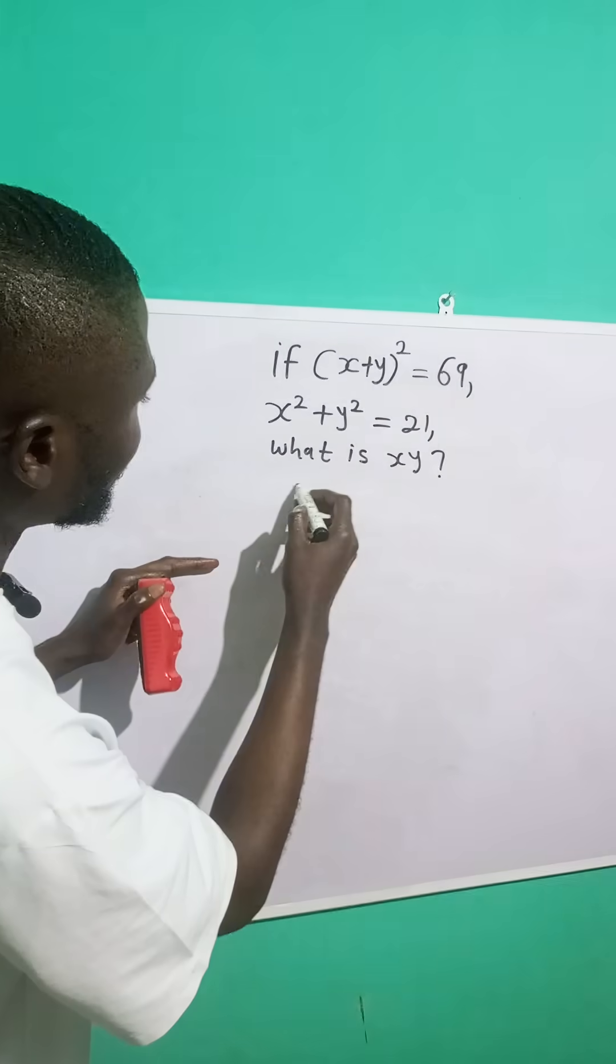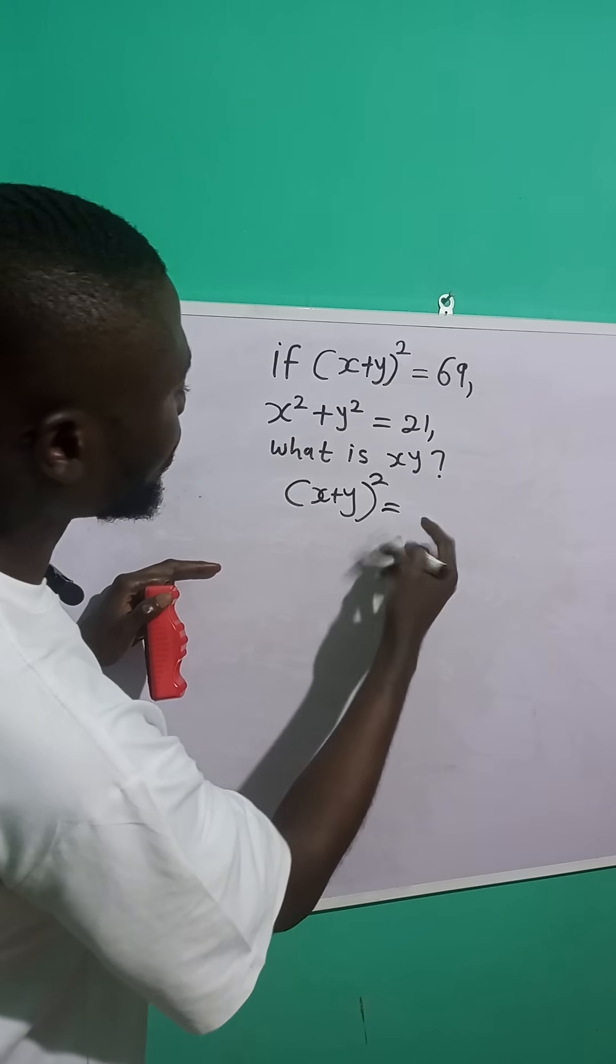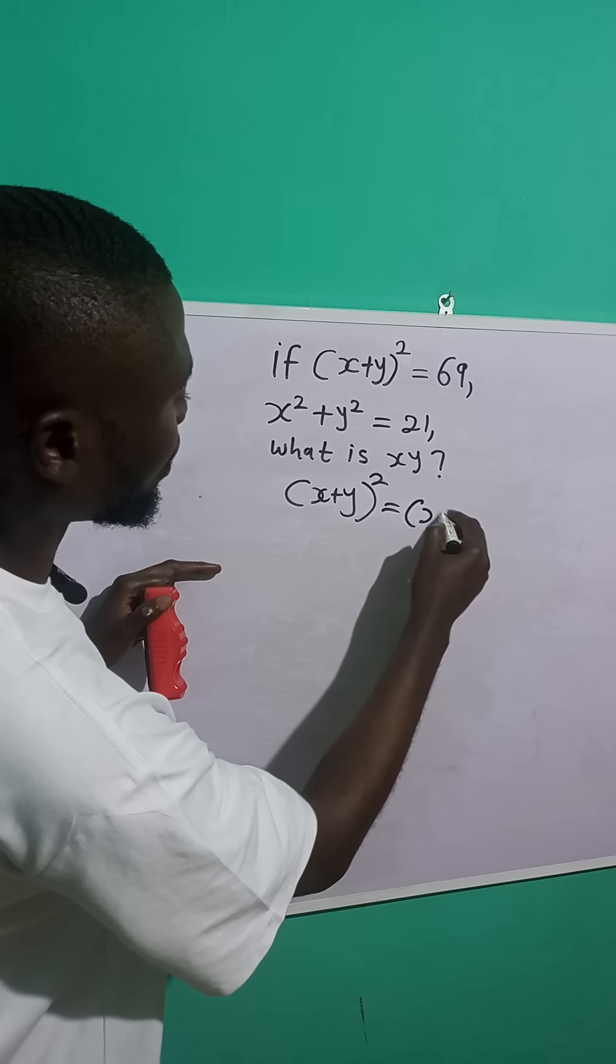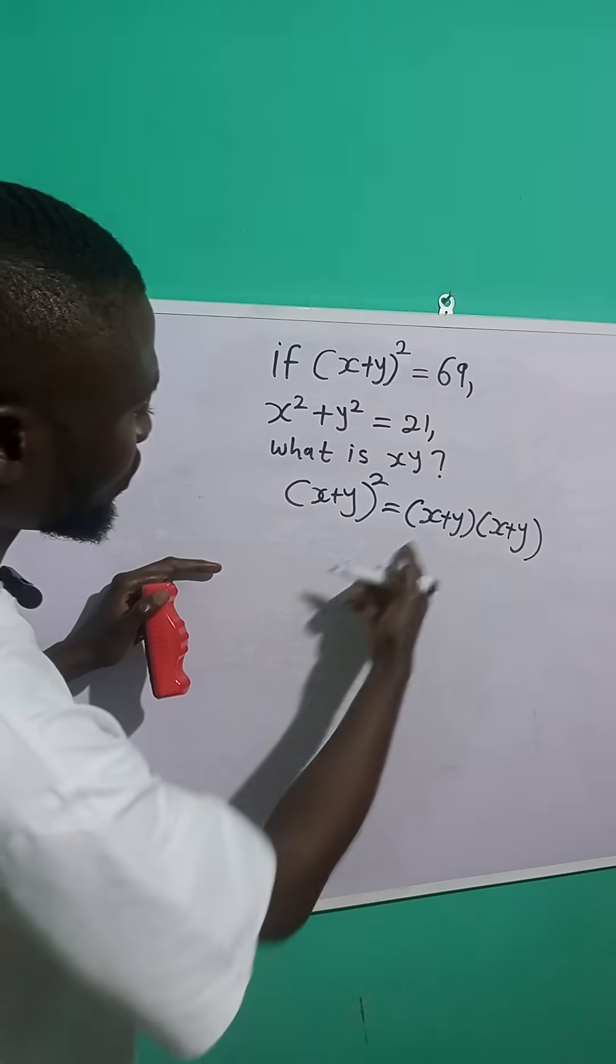So let's just expand this. x plus y raised to the power of 2. If you expand this, you are getting x plus y times x plus y, right?